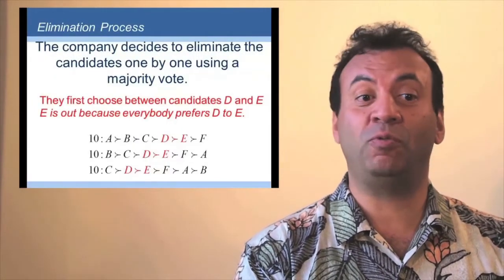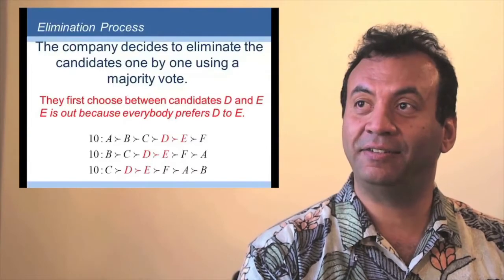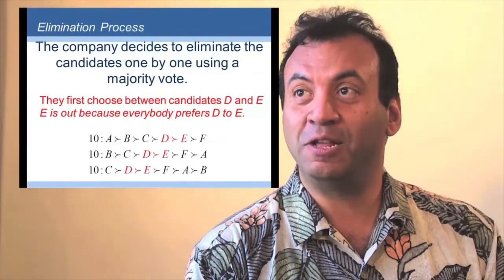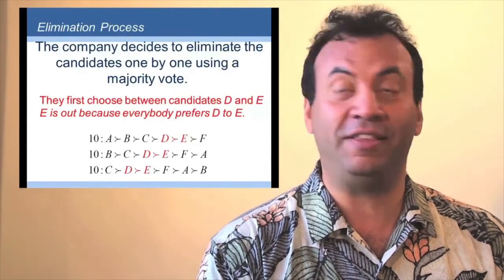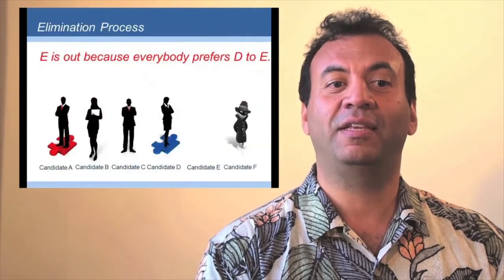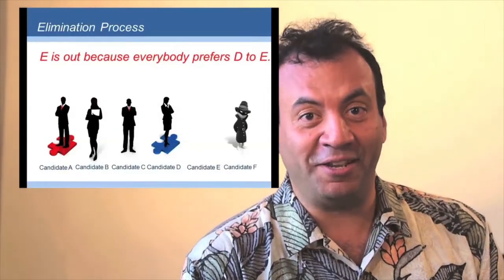So they choose between candidates D and E. Now, notice on the slides here, everyone prefers D to E. So if they did a majority vote between D and E, D will win. Now, candidate E has been eliminated.